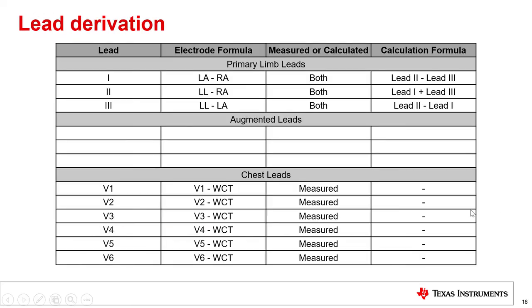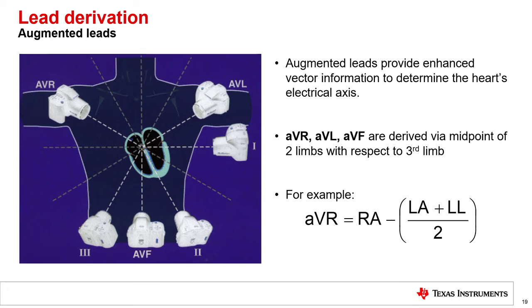Next, we will cover the final group, the augmented leads. These leads provide enhanced vector information, which is used to determine the heart's electrical axis within the body, and provide physicians with even more information to make a diagnosis. The augmented leads are named augmented vector right, augmented vector left, and augmented vector foot, or AVR, AVL, and AVF, respectively. Each augmented lead uses one of the primary electrodes as the positive input, while the average of the remaining two is used for the negative input. For example, AVR is measured as the RA electrode minus the average between LA and LL.